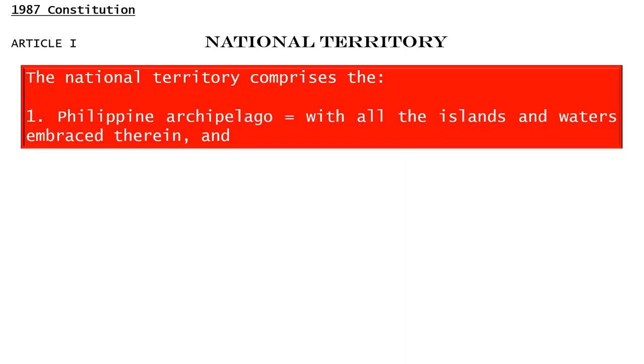1987 Constitution, Article 1, National Territory. This is a Read With Me series. If you have already read a lot or haven't read anything yet and you just want a quick read, then please join me. The National Territory of the Philippines comprises: 1. the Philippine archipelago with all the islands and waters embraced therein, and 2.